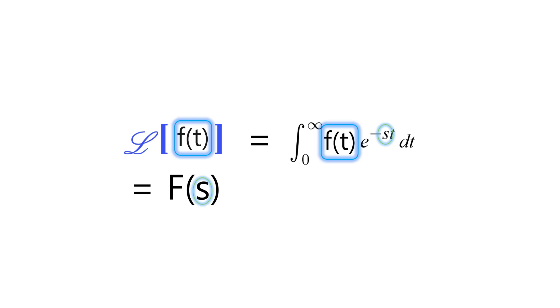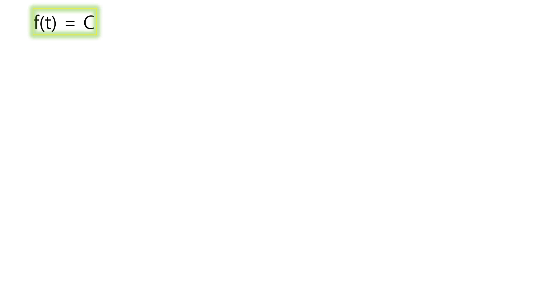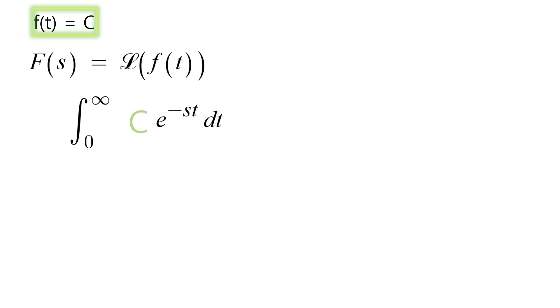Let's practice — solve the integral formula. How about f(t) being a constant? It's easy because we only have to calculate this integral and put the function into this place. For this example, the function of t is constant, and a constant is able to come out of the integral by the linear property — a concept from high school math.